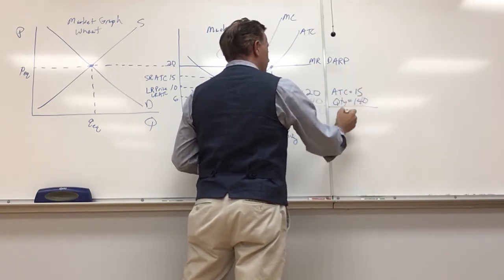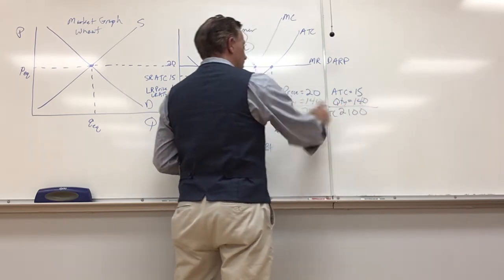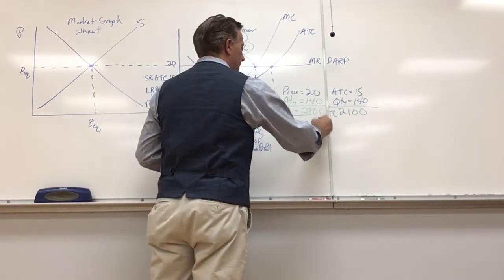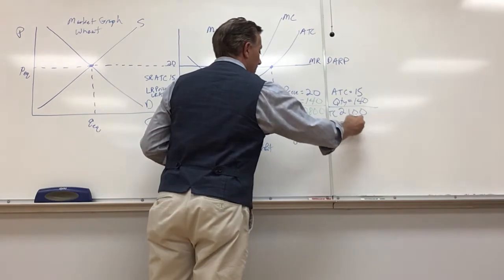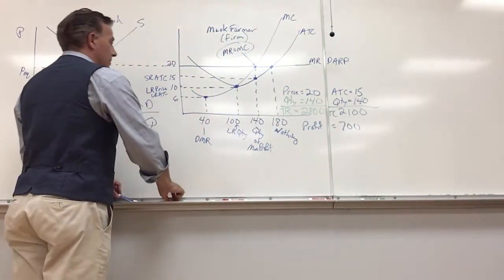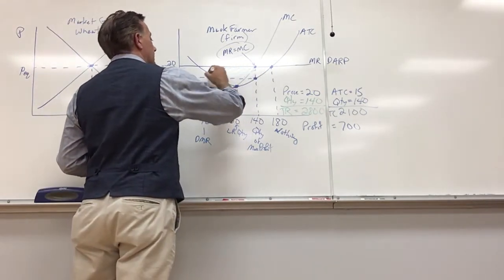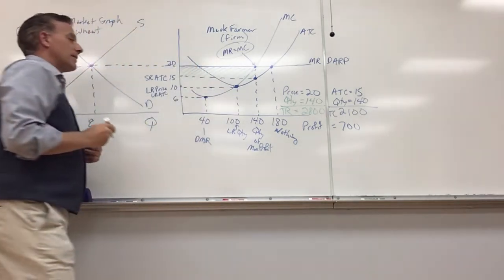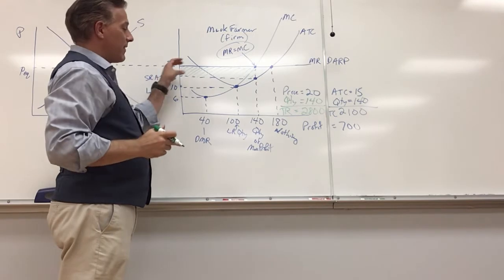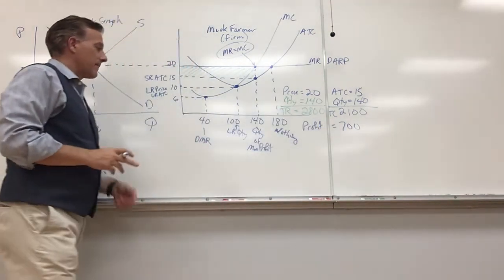My total revenue 2800, my total cost 2100. My profit, my economic profit, is going to equal 700. 2800 minus 2100, which is consistent with this rectangular isthmus, the narrow strip of land here that represents our profit. I can verify: I got 5 times 140, that should equal 700 and it does.